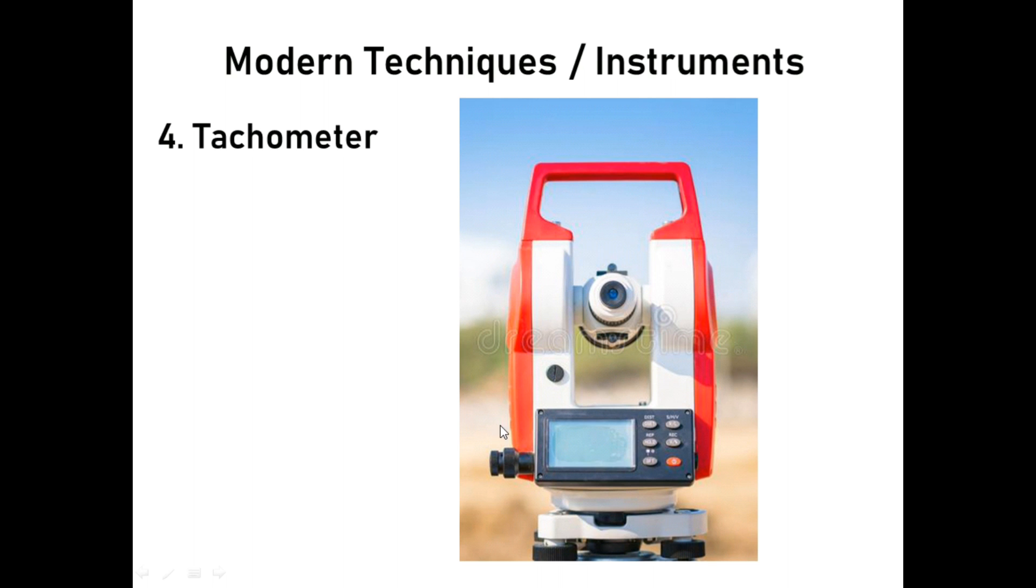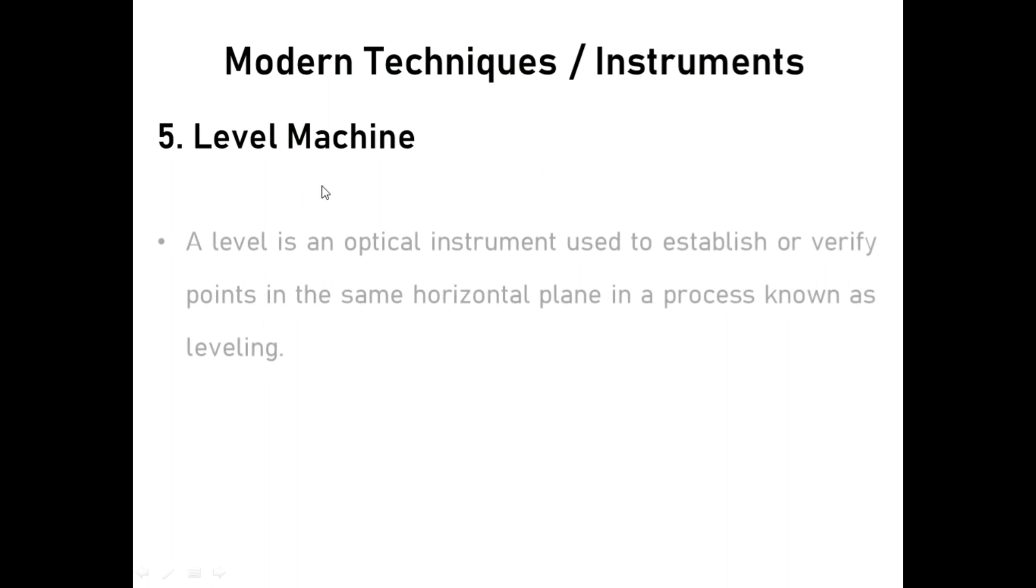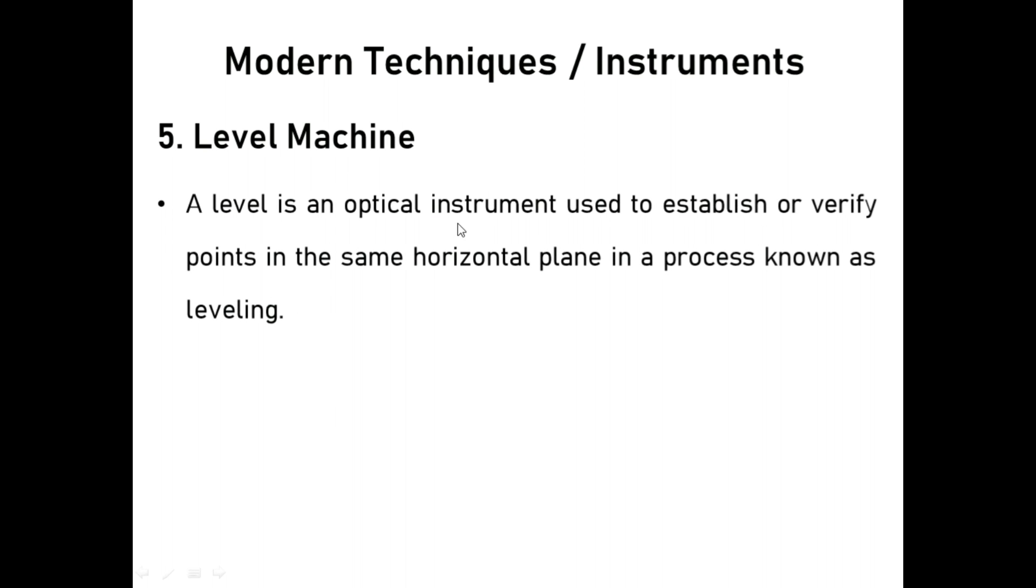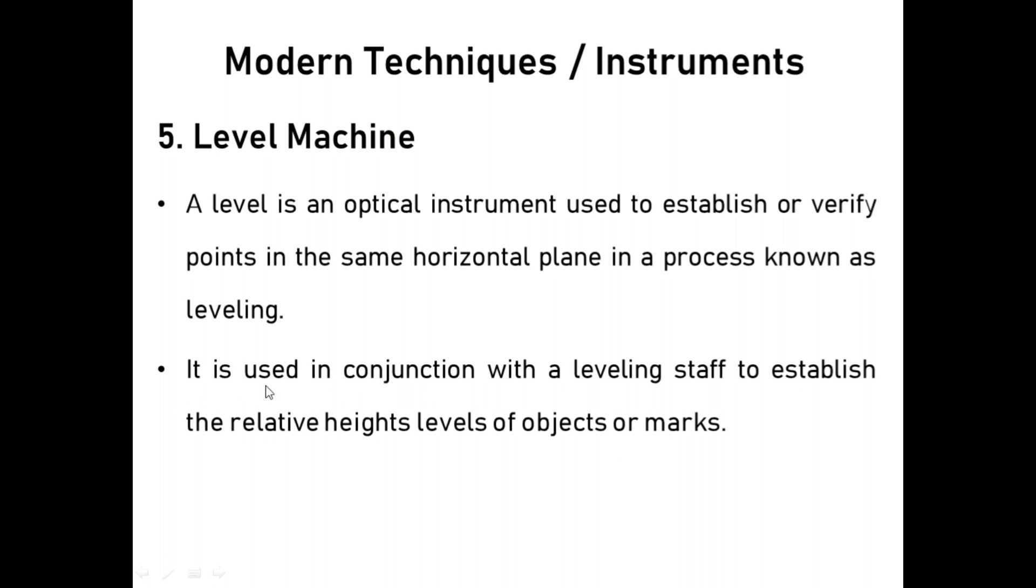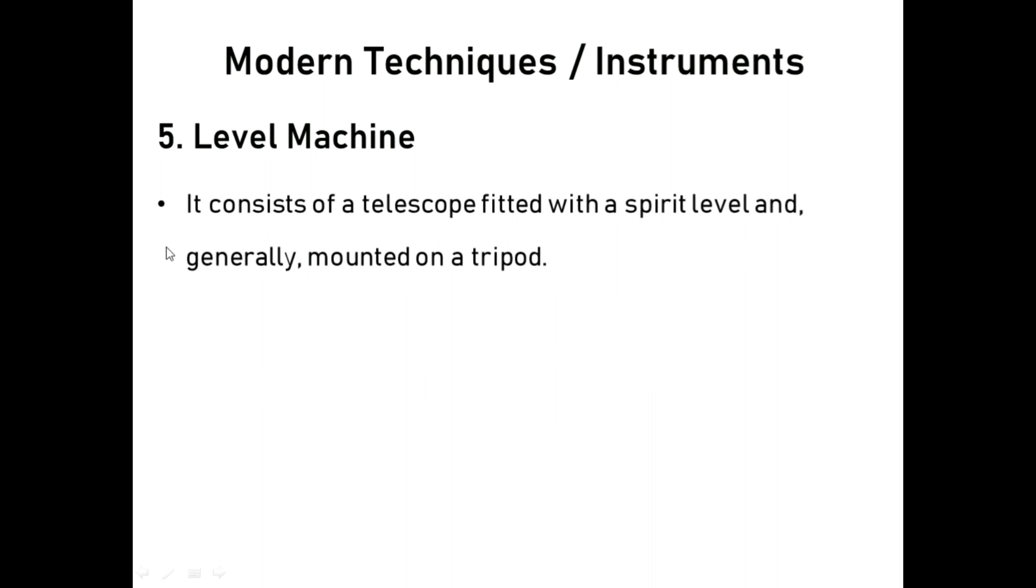In this slide you can see the picture of tachymeter. Now level machine - a level is an optical instrument used to establish or verify points in the same horizontal plane in a process known as leveling. It is used in conjunction with a leveling staff to establish the relative heights of objects or marks. It consists of a telescope fitted with a spirit level and generally mounted on a tripod.